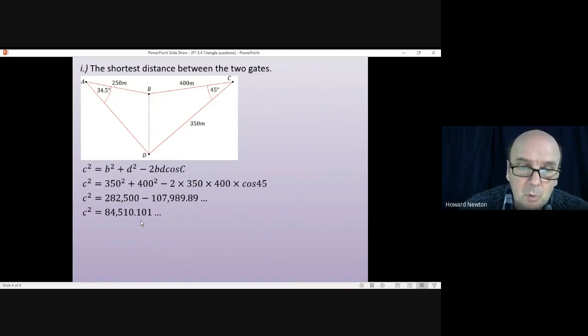That gives us c² = 84,510.101 and so on. Square rooting that gives us the length BD which will be 290.7062 meters. Rounding that to three significant figures gives us BD is 291 meters.